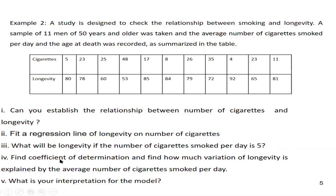Question number four is to find how well our model fits. Because if we fit a model, how can you know how well it fits? Our model — that longevity depends on the number of cigarettes — can be evaluated using what is called the coefficient of determination. So we want to know how much the number of cigarettes explains the longevity, and we have to make that interpretation.